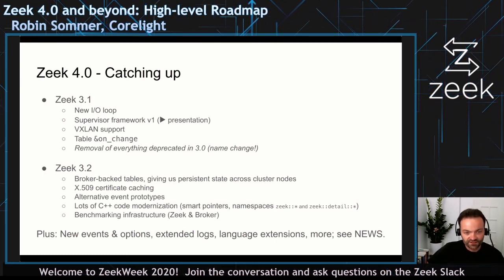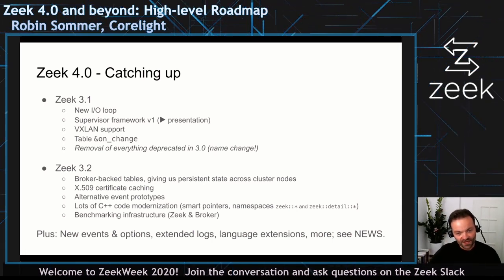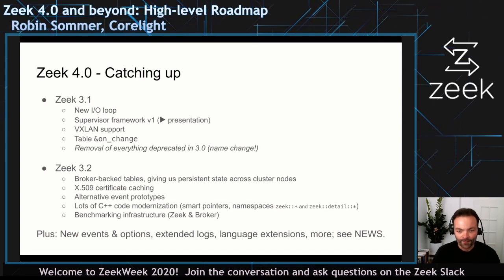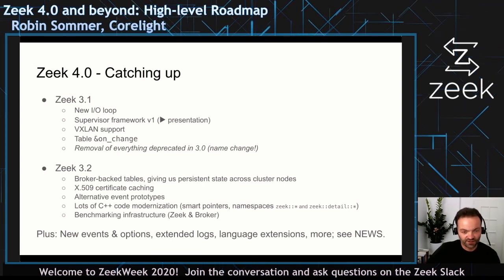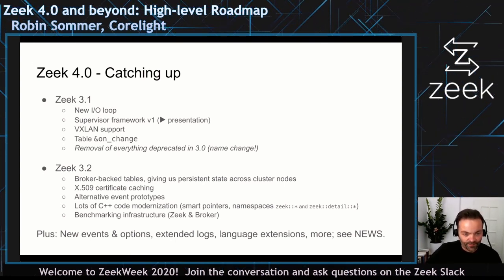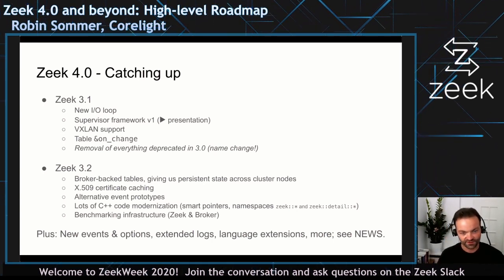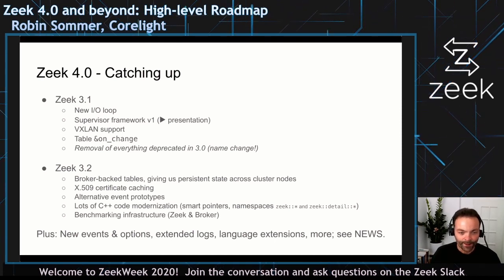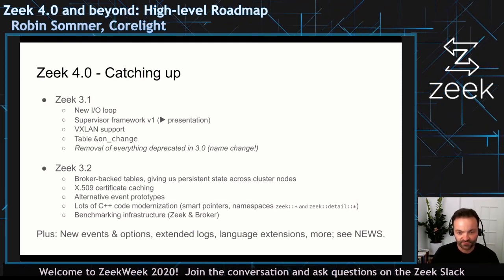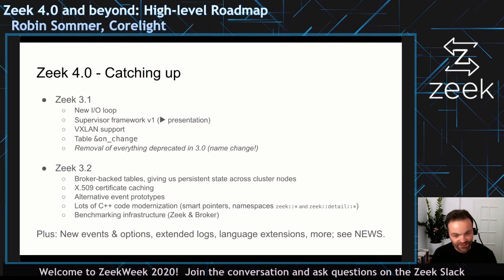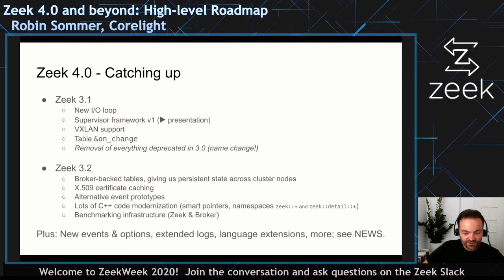Zeek 3.2, our most recent stable release, added broker-backed tables — you can now tie a script-level table to a broker store on disk, giving you persistent state across cluster nodes. That's a pretty cool feature for retaining information derived from traffic long-term. We added certificate caching to improve X.509 analysis performance, and overloading for event prototypes, making it easier to keep backwards compatibility in the future. Under the hood, there's a lot of C++ code modernization going on that users won't see.